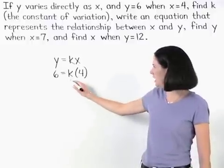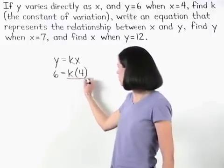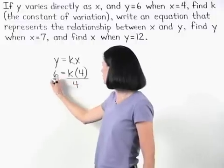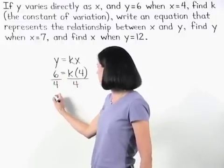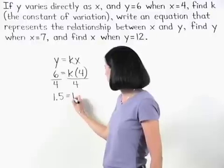Now to solve for k, we divide both sides of the equation by 4, and we find that 1.5 equals k.